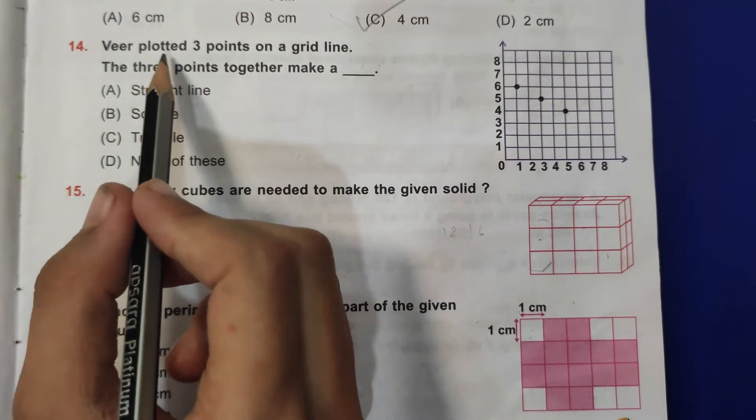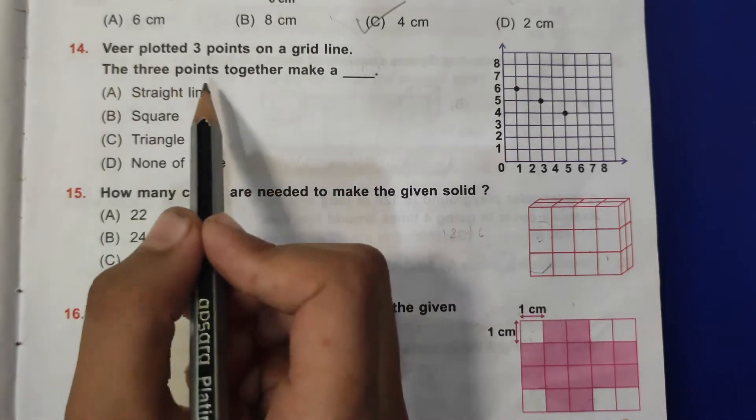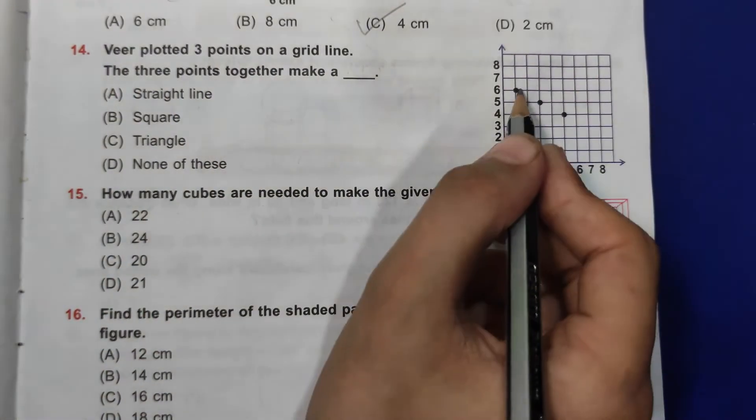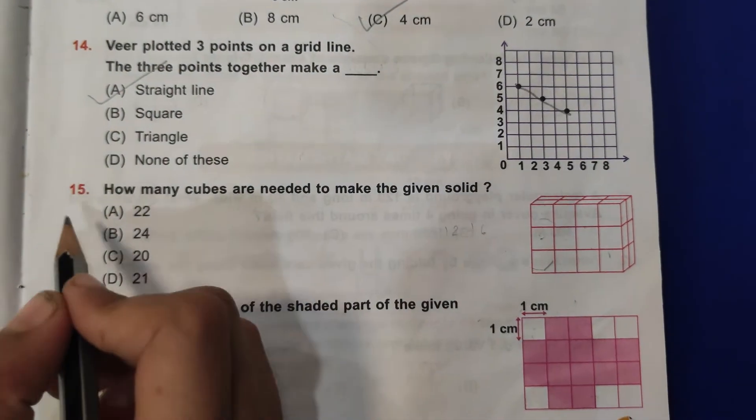Fourteenth question: we plotted 3 points on a grid line. The 3 points together make a - so if we connect them, it will make a straight line. So a straight line is the correct answer.